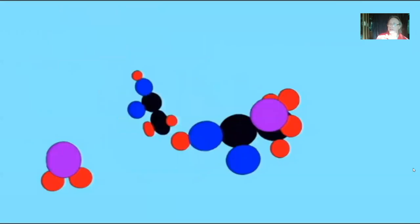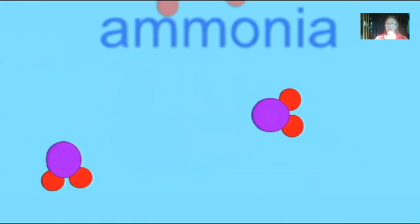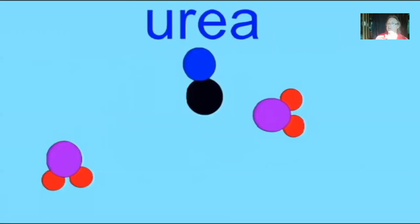That is toxic. The liver helps you out by converting what would be ammonia into urea, by taking two amino groups and joining them to a central carbon. But still, this is toxic and needs to be eliminated from your body. So when you digest your food, your body builds up this toxic nitrogenous waste, and it must be removed.